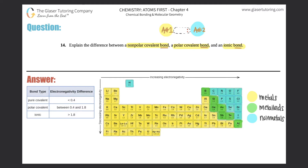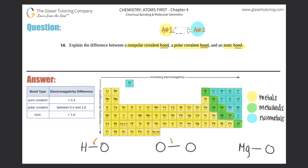Let me give you three different types of examples. We'll look at an H-O bond, then a pure O-O bond, and then an Mg-O bond. Let's talk about how the electrons in these three bonds can be either non-polar covalent, polar covalent, or ionic.